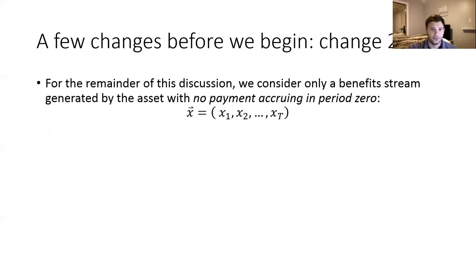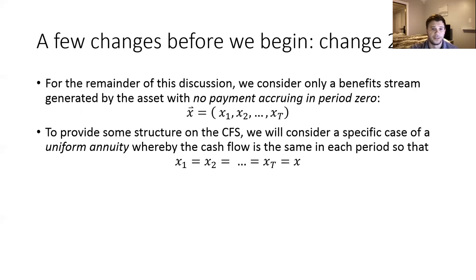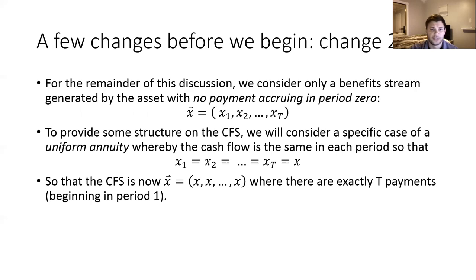The second change, once we've gotten rid of X-zero, is we're going to add a little bit of structure to the problem and consider a specific case of a uniform annuity, which is just a fancy name for a cash flow stream where the size of the payments being made in every period are all the same. We can then get rid of the time subscripts and rewrite the cash flow stream as just a series of X dollar payments. There are exactly T of these payments, beginning in period one.